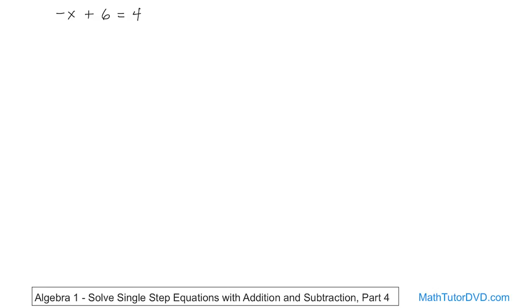all right, you want to get x by itself. Now I realize that the x here has a negative sign in front of it, but for now just ignore that. You kind of look at these things as a puzzle to solve. What do I need to do first? What do I need to do second? The plus 6 here is the biggest problem. We need to get rid of him.